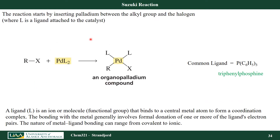This reaction starts off with my allylic or aryl halide. It actually inserts into the palladium catalyst to form an organopalladium compound. Here is my R bonded to X — now I have R-palladium-X, so I've inserted the palladium between the R group and the X group.